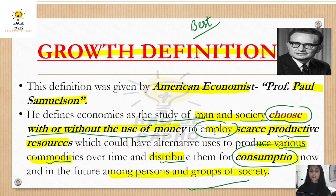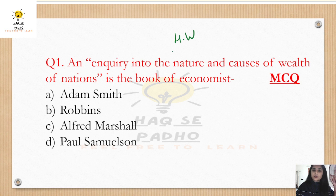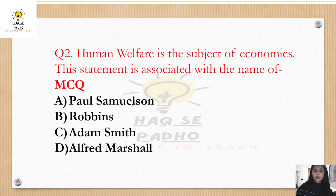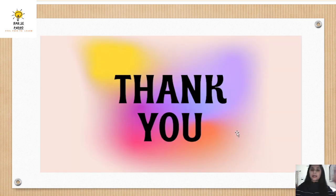I hope you have clarity on all the definitions and what the main focus of each economist was. Now there are two homework questions. First: who has written which book? You will tell me by commenting. Second: who has discussed and emphasized the question about human welfare? Please comment your answers. We will see you in the next video. Don't forget to like the video if you enjoyed it, and share it with your friends. Stay tuned with the channel.